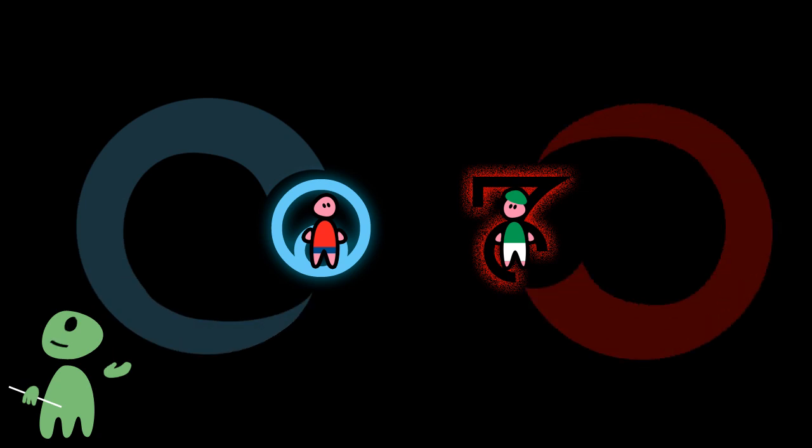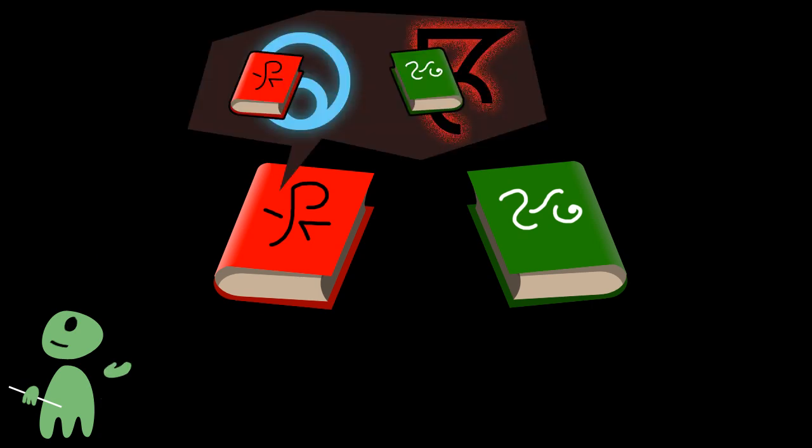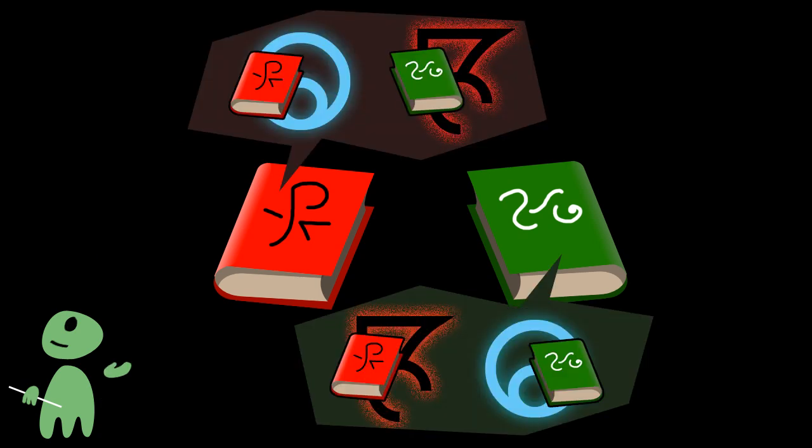The good guys are good because they kill the evil guys, and the evil guys are evil because they killed the good guys. If both tribes have different ethical systems, things get even worse, as each tribe uses its own ethics to judge the ethics of the other tribe.